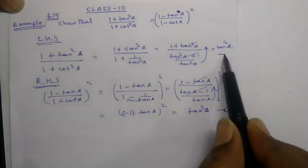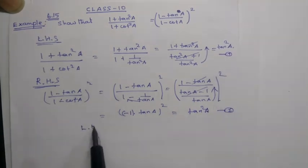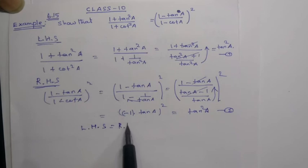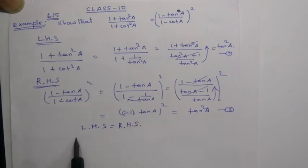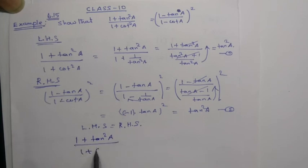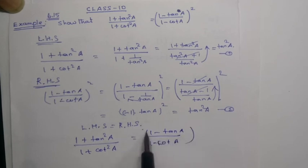This equation equals 1. Therefore, LHS equals RHS. 1 plus tan square A by 1 plus cot square A equals 1 minus tan A by 1 minus cot A, whole square.